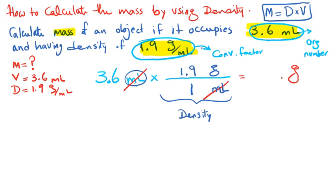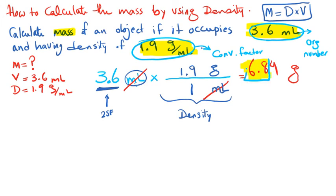So the strategy is set up correctly: 3.6 times 1.9 divided by 1. If you calculate that, 3.6 times 1.9 gives us 6.84 grams. But the last step — we need to report our answer with proper sig figs. Our original number 3.6 has two sig figs, so we need to finish with two sig figs as well. Looking at 6.84, the digit 4 is less than five, so we drop it and report 6.8 grams.